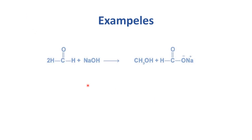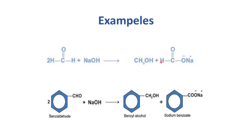Here we have some examples. Formaldehyde reacts with sodium hydroxide and yields methyl alcohol; the second molecule is converted into the sodium salt of formic acid. The second example is benzaldehyde, which yields benzyl alcohol and sodium benzoate.